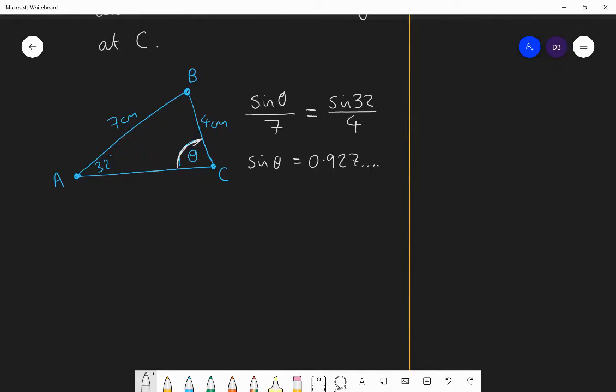And I know that if I've got sine theta is 0.927, to find the angle, use the inverse of sine of 0.927, which is 68.0 to one decimal place. And I think, great, I found an answer. It looks sensible. That looks like it might be 68 degrees. I'm done. But at GCSE level, you probably would be done. Now we're getting more advanced, there is actually another answer to this question.